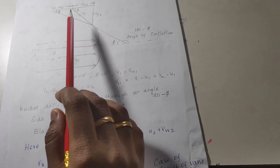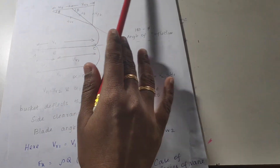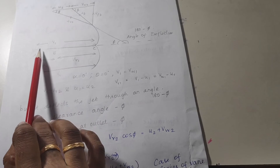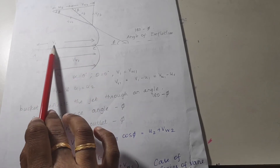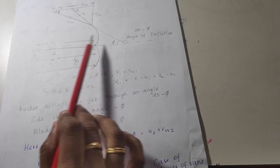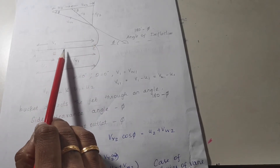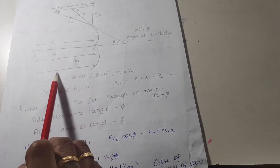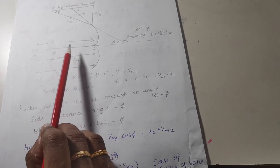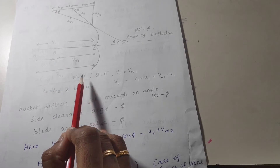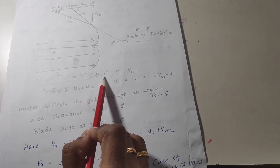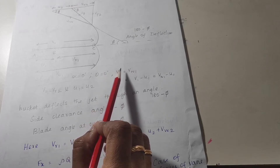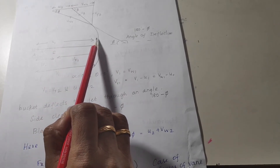In this video we are going to see about the velocity triangle of a Pelton wheel. This is the diagram showing how to draw the velocity triangle. This is a jet of water coming with velocity v1, and the vane is also moving with velocity u, so the relative velocity will be vr1. The horizontal component of v1 is vw1. Since there is no inclination, alpha is equal to zero and theta is equal to zero, so vf1 is equal to zero.